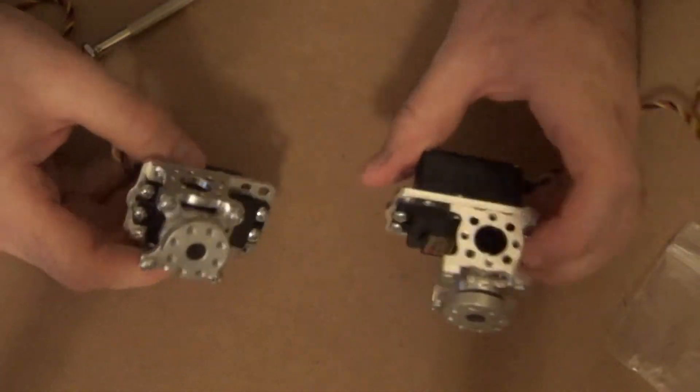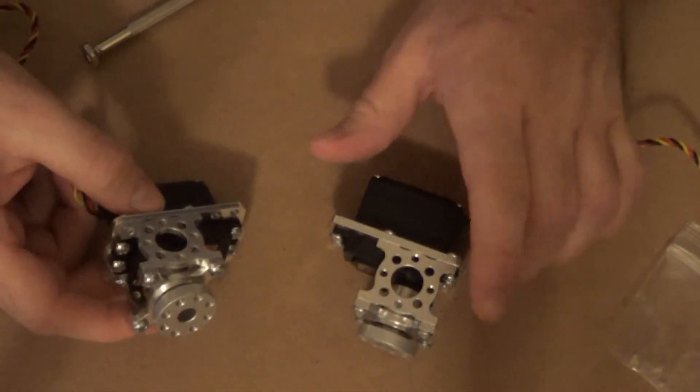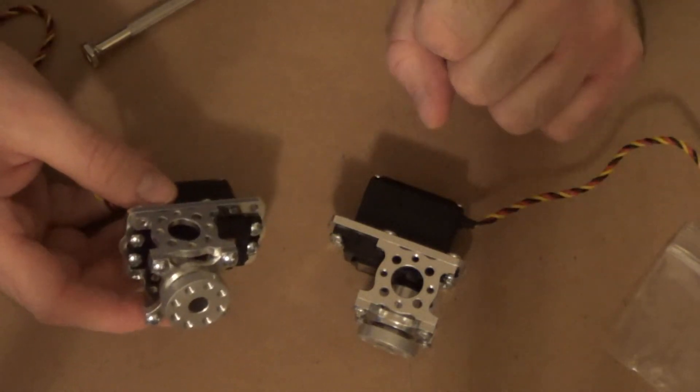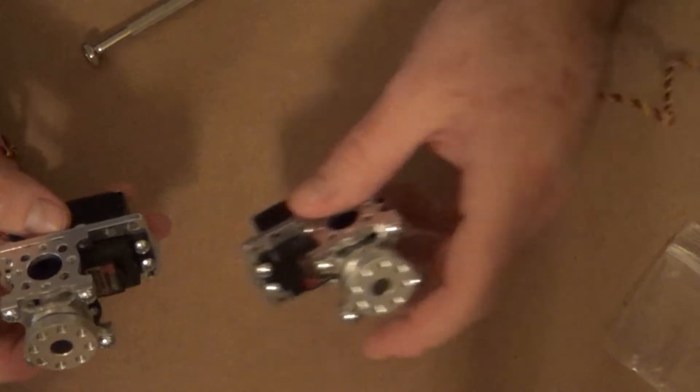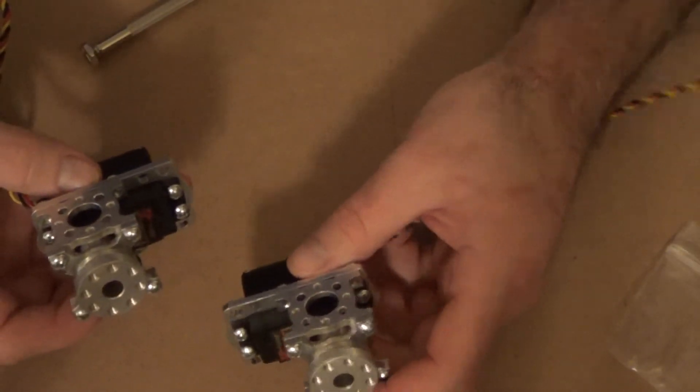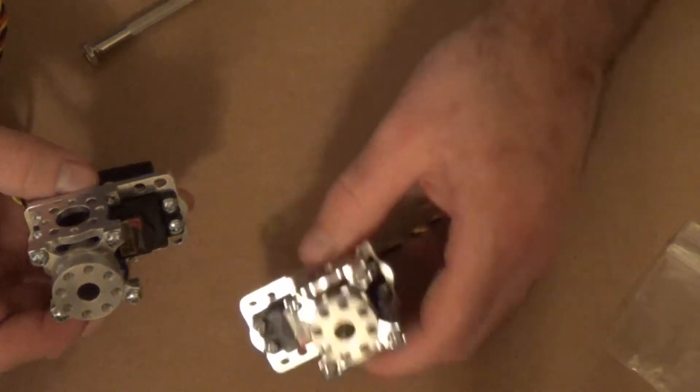This is what two servo blocks looks like when they're connected to two servos. What's interesting about this is, or what I wanted to point out, was that you can actually connect the two servo blocks together.